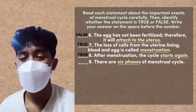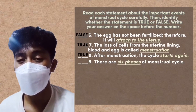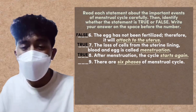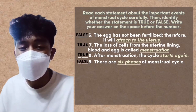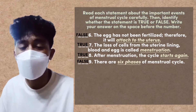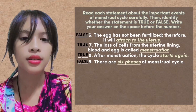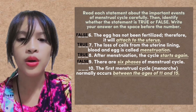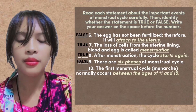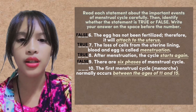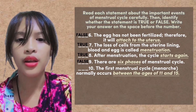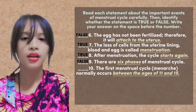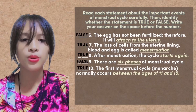Number 9: There are 6 phases of the menstrual cycle. The answer is false, because the menstrual cycle only has 4 phases. Number 10: The first menstrual cycle, menarche, normally occurs between the ages of 11 and 15. The answer is true.